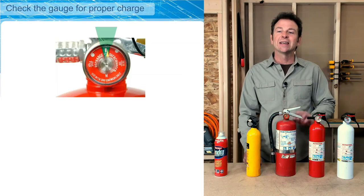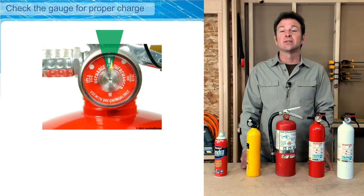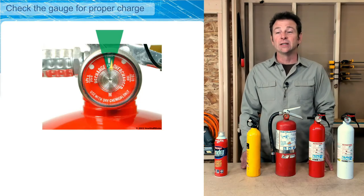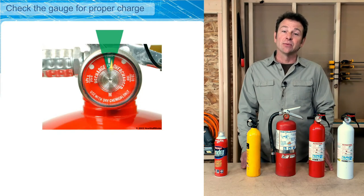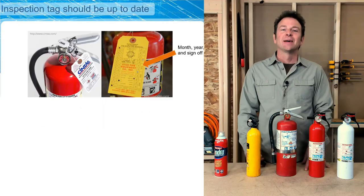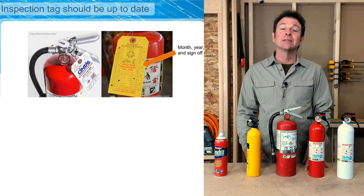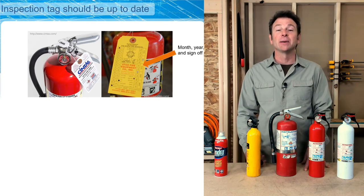Here's a close-up of the gauge. As you can see, there's a green region and a needle — the needle needs to be in the green region, which tells us the extinguisher is charged properly and ready to go. By law, fire extinguishers need to be inspected yearly. Inspection tags should be on the extinguisher and up to date, so look for that date.